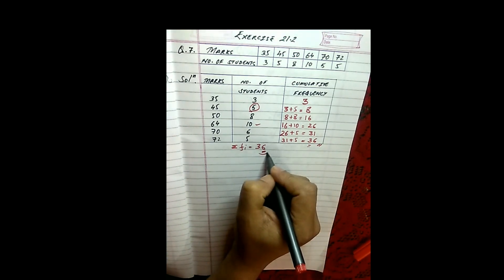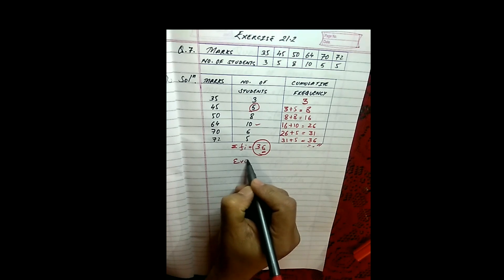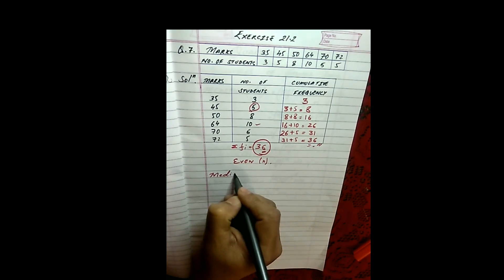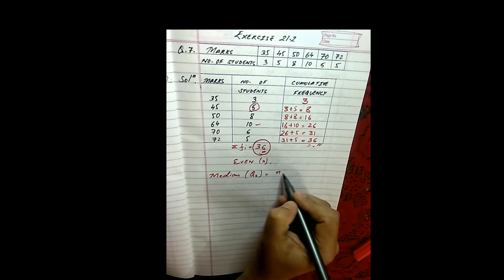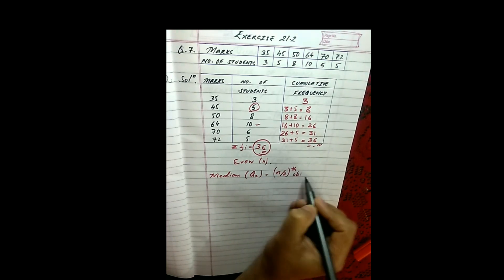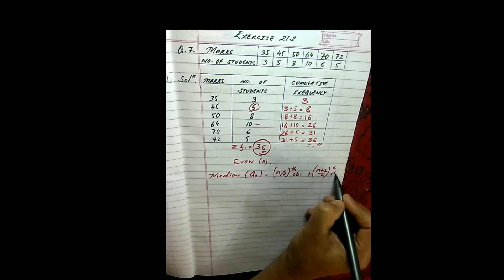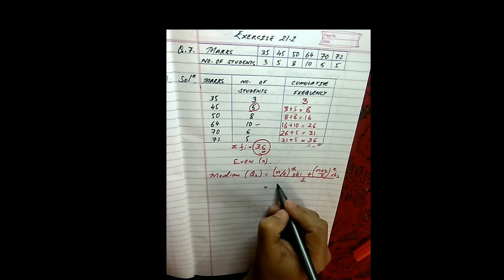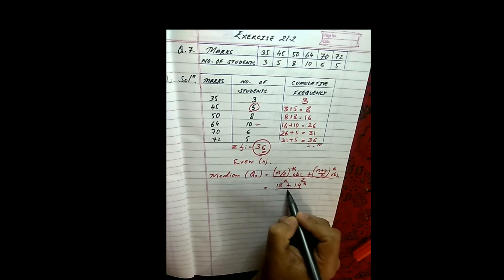Here we can see the value of n is 36, or the cumulative frequency is 36, which is even. So here we have an even value of n. Let us now find out what is the median. The median, as I told you, is denoted by Q2. Since the value of n is even, we use the formula: the n by 2th observation plus the n plus 2 by 2th observation, whole divided by 2. So n by 2 is 36 divided by 2, which is the 18th observation. Then 36 plus 2 is 38, divided by 2 is the 19th observation, divided by 2.